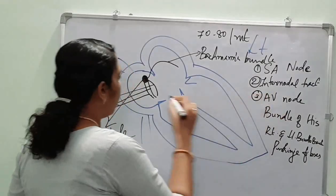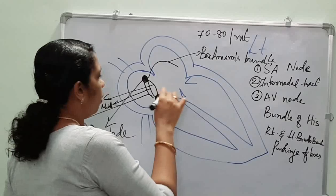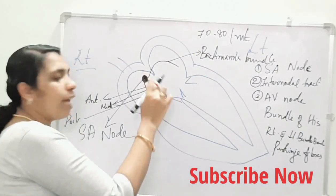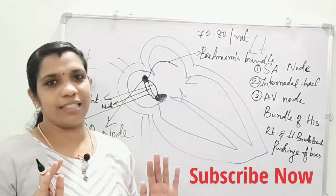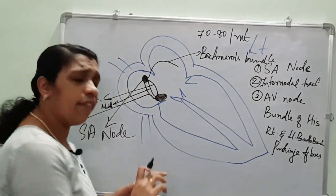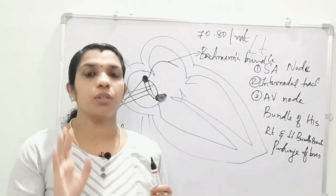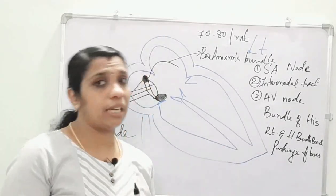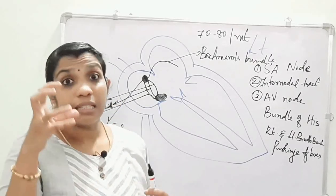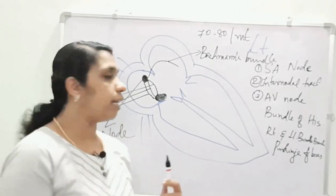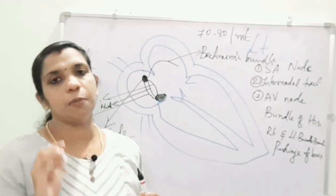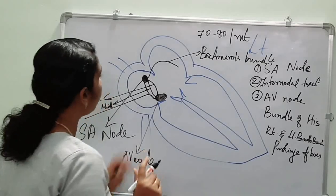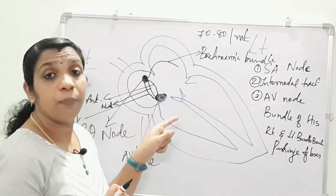Next is the AV node — the atrioventricular node. Both the SA node and AV node are situated in the right atrium. The AV node is situated in the posterior aspect, just behind the tricuspid valve. The impulses produced from the SA node travel through the internodal tracts and reach the AV node.